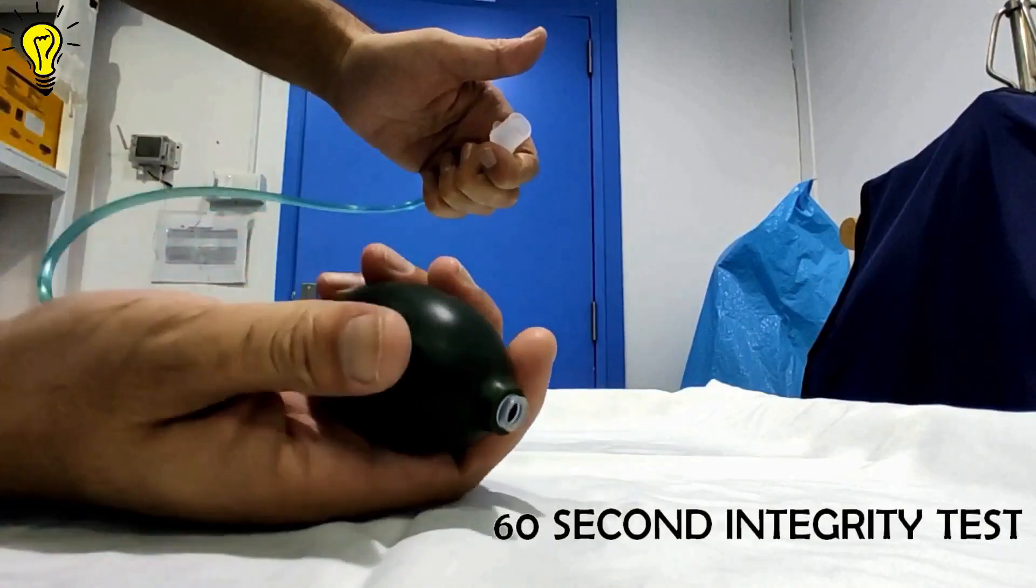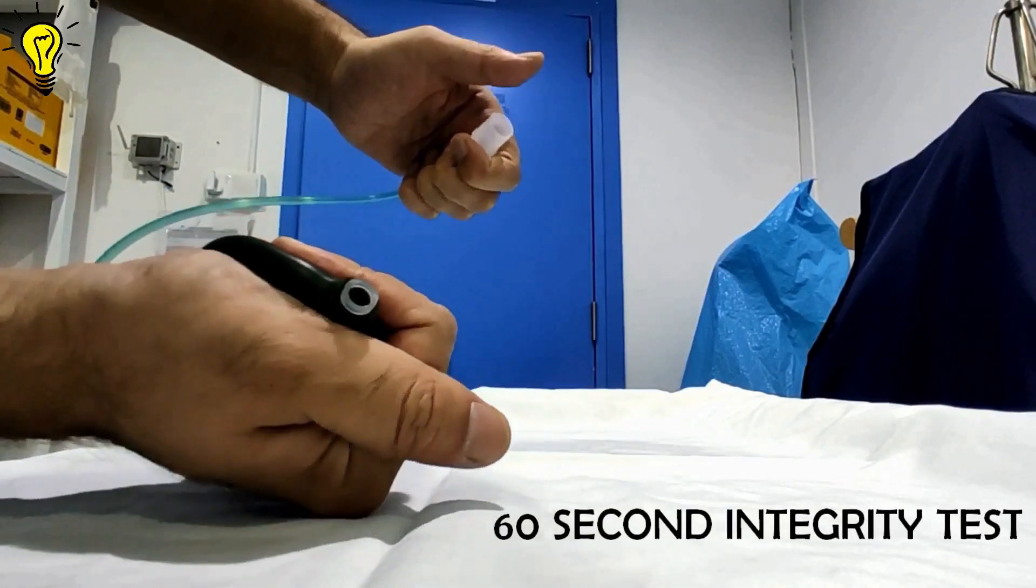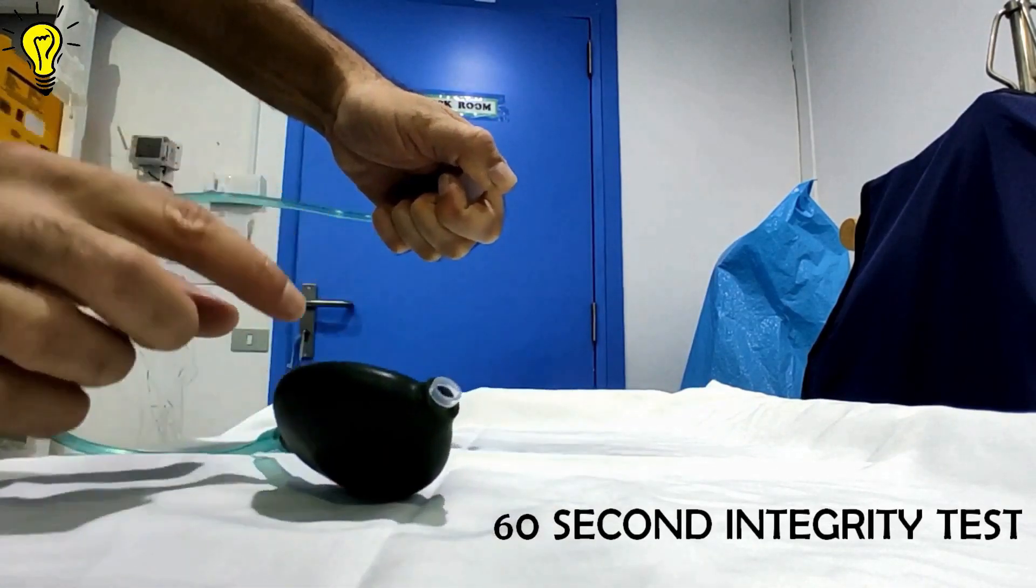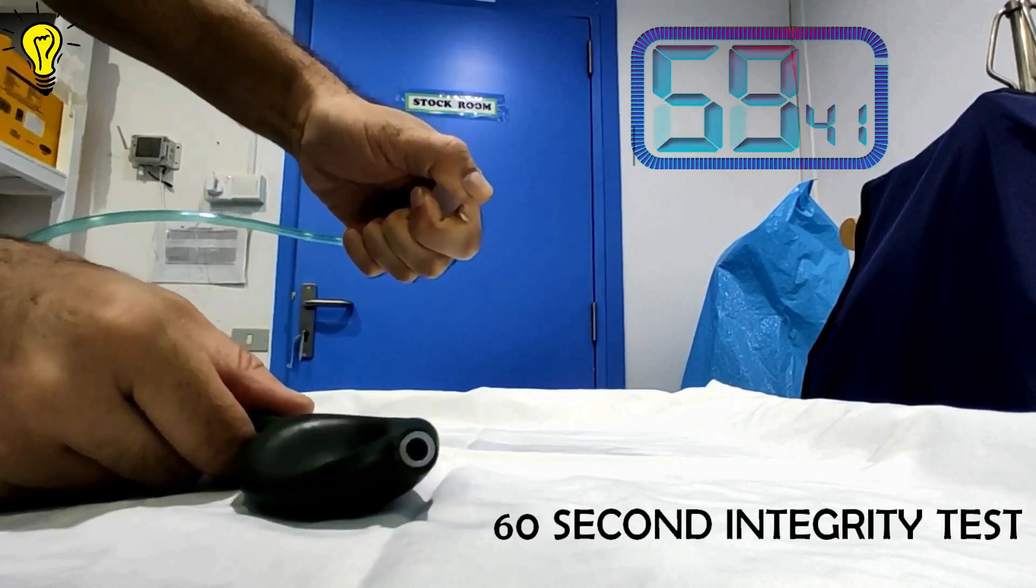To check the integrity of suction bulb system, deflate the cuff many times until fully collapsed and block the outlet connector with your thumb. The cuff should stay deflated for at least 60 seconds.